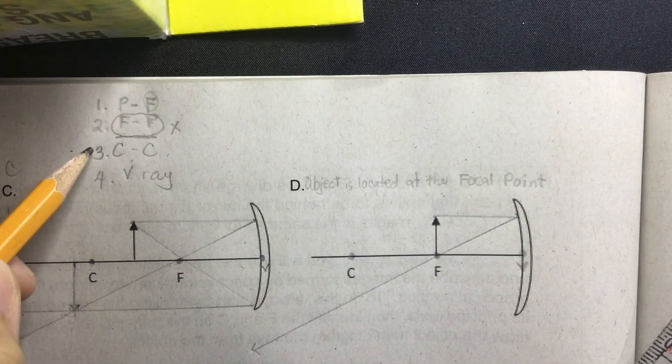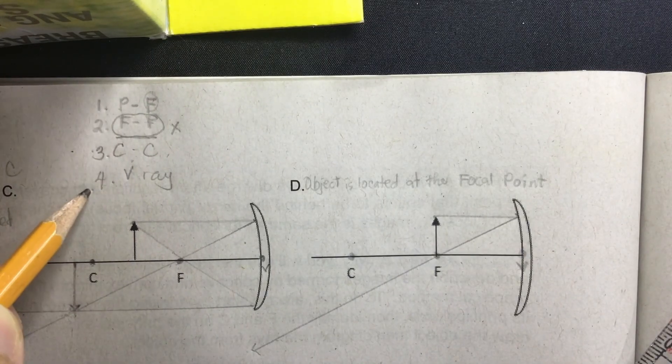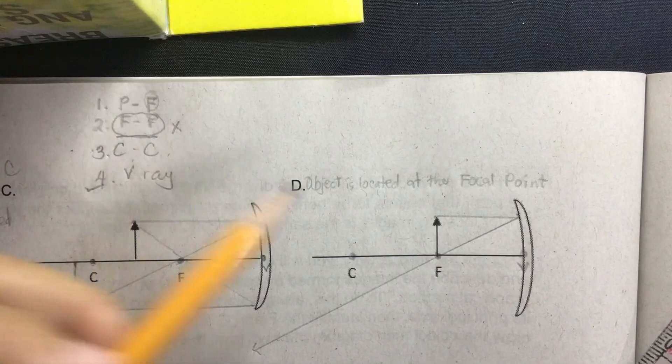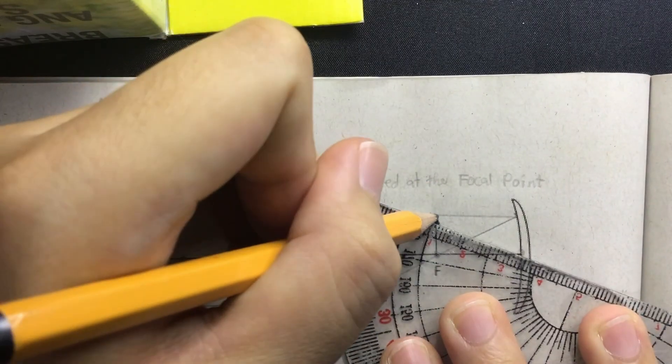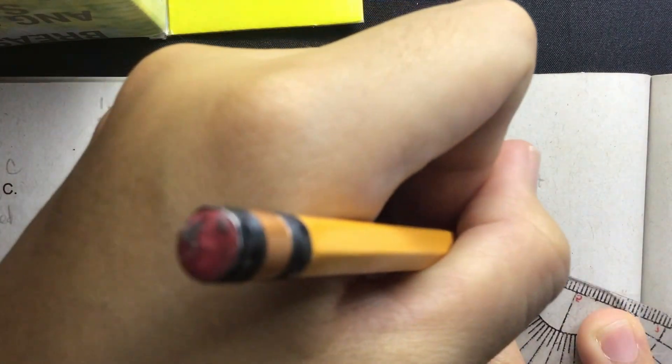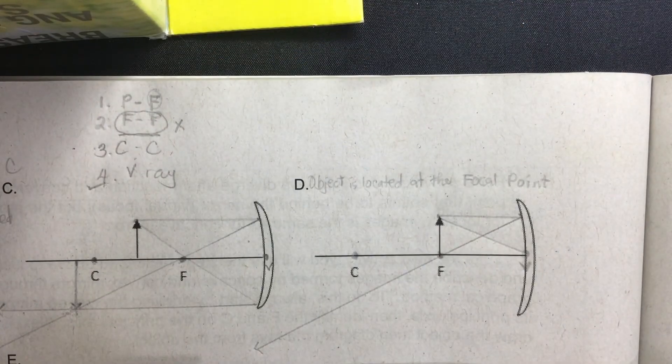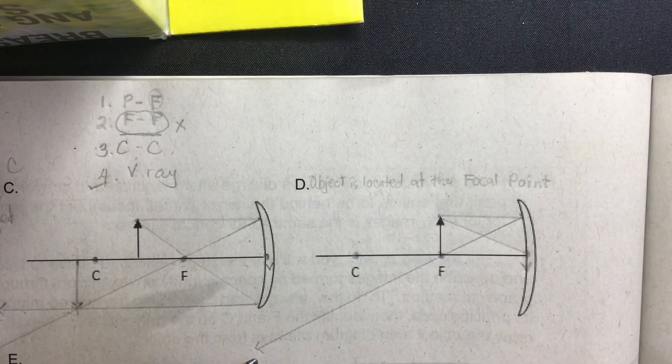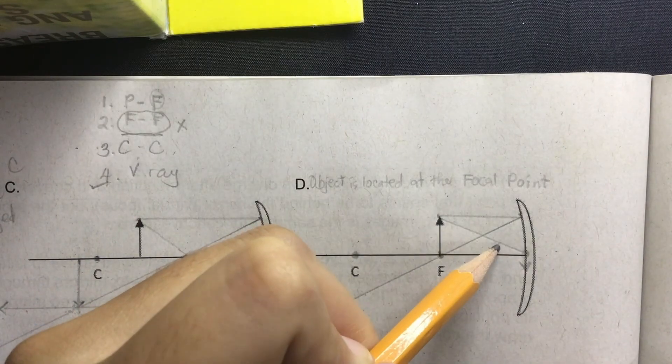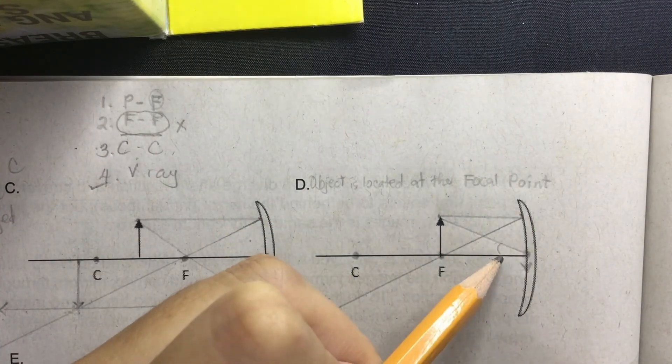So let's try the V ray first. V ray is a ray of light directed towards the vertex of the mirror. So that is our incident ray. It hits where the vertex is, but then it follows the law of reflection that the angle of incidence should be equal to the angle of reflection.